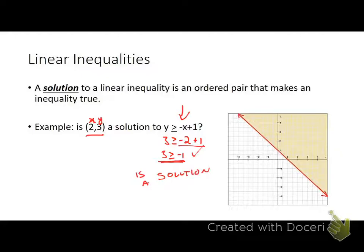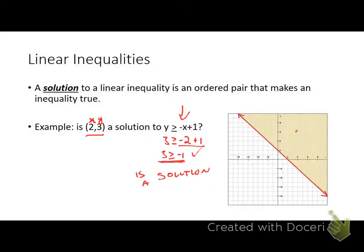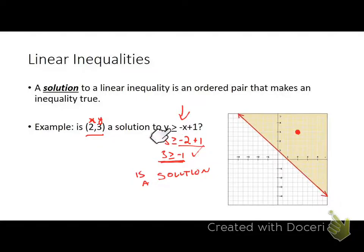We can represent the same inequality on the graph. In this case, I can see that the point (2, 3) is a solution because it falls within the shaded region. All the points within this shaded region are solutions to this inequality. So I can check by substituting in, or I can check by graphing.